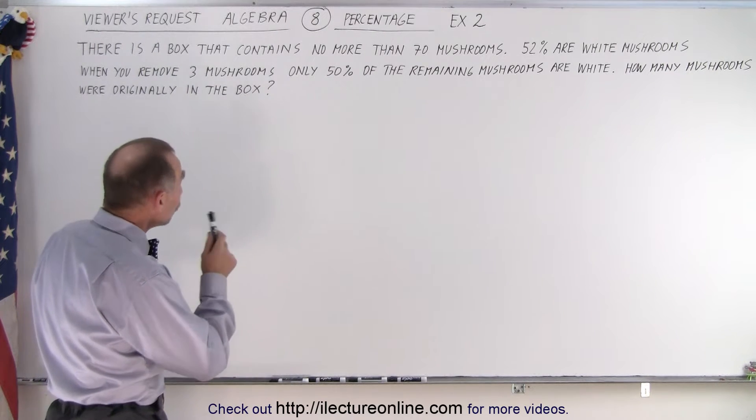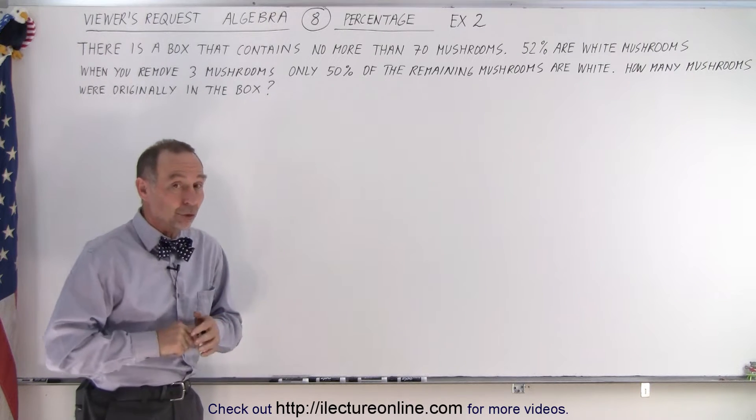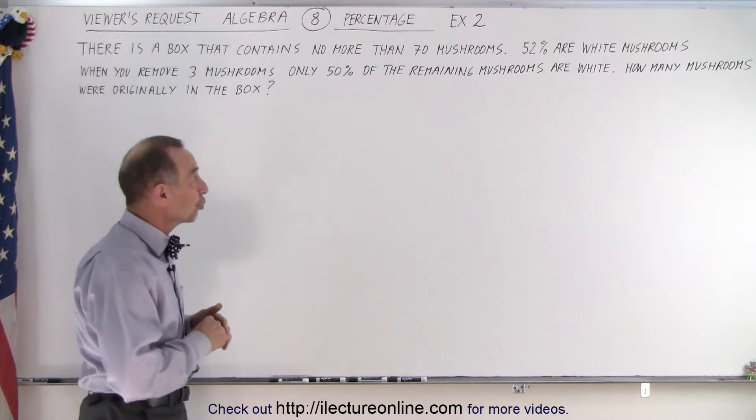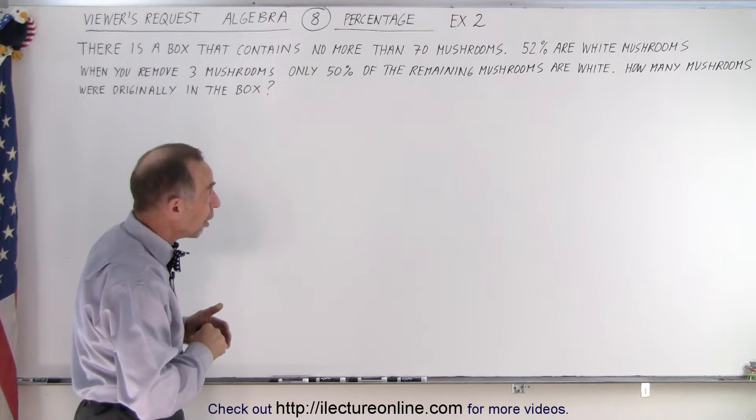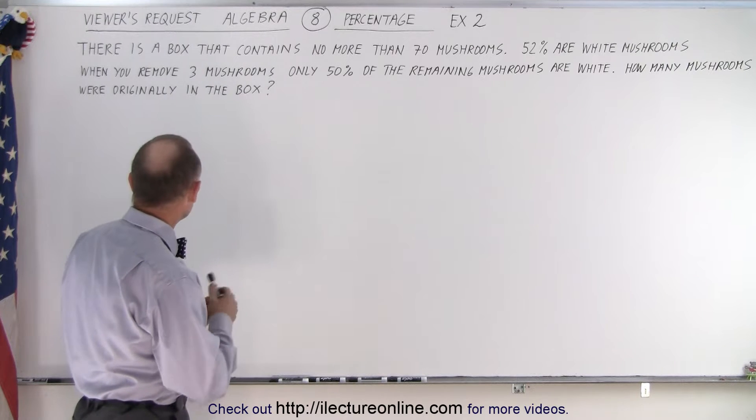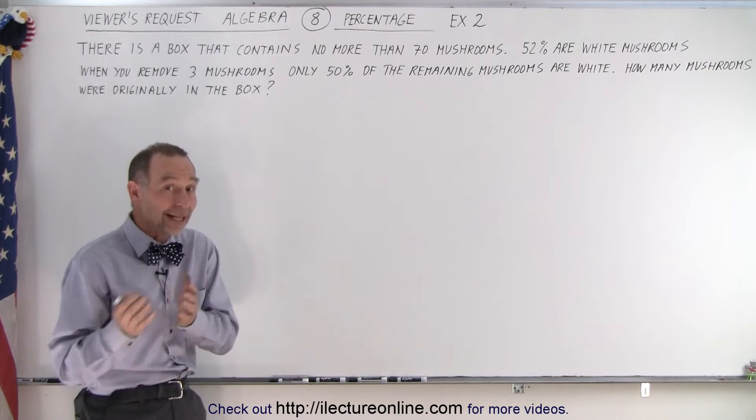There is a box that contains no more than 70 mushrooms. So it could be 70 or less mushrooms. 52% of them are white mushrooms. When you remove three of the mushrooms and they don't tell us what kind of mushrooms you remove, white ones or other type, let's say there's white and black mushrooms to make it easy.